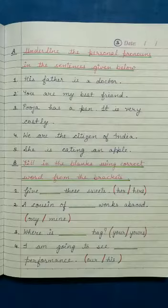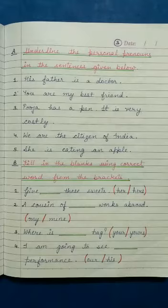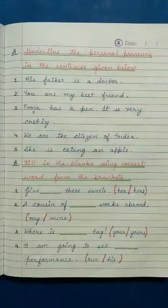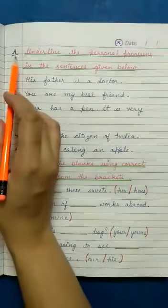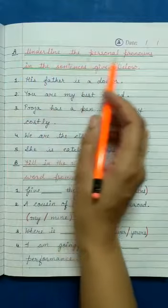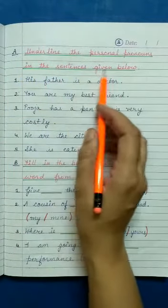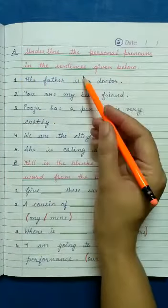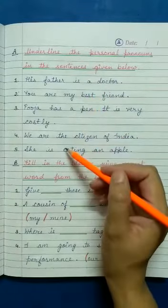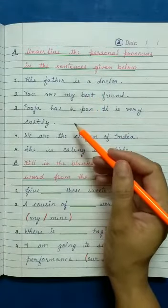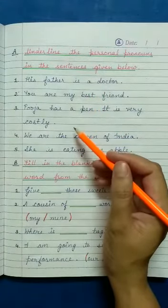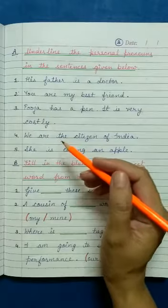Now we come to the exercise of this chapter. This chapter consists of two exercises — Exercise A and Exercise B. Exercise A: Underline the personal pronouns in the sentences given below. यहां कुछ sentences दिये हैं, इनमें हमें find करना है personal pronoun और उसे underline करना है.